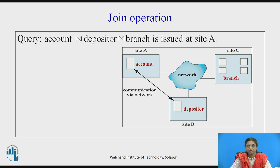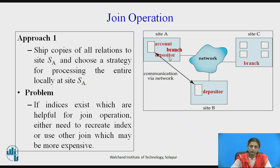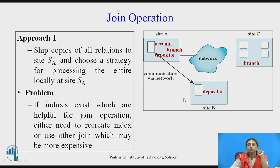At site A only the account relation is available, so we need to shift branch and depositor to site A, or account needs to be shifted. The first approach is to ship depositor and branch to site A and then perform the join operation locally at site A. The problem here is that if indices exist for depositor and branch which would be helpful for the join operation, we cannot use that index join. We would have to recreate indices or use a more expensive join strategy due to non-availability of indexes.